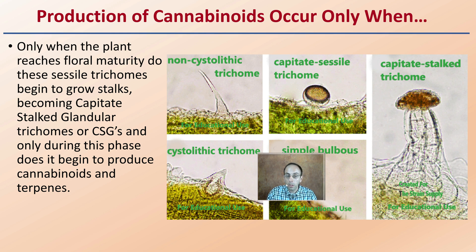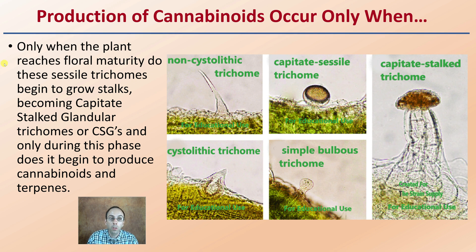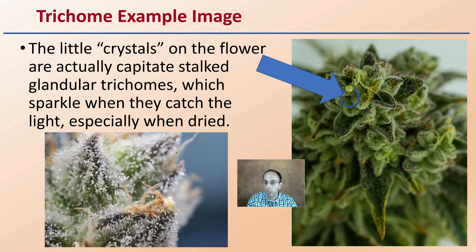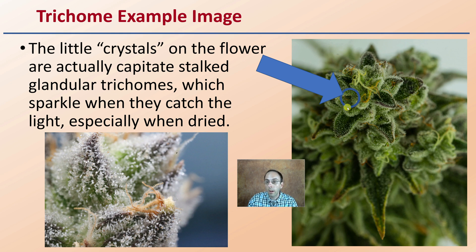Production of these cannabinoids will only occur at certain points — only when the plant reaches floral maturity do these sessile trichomes begin to grow stalks and become CSG trichomes. Only during this phase does the plant begin to produce cannabinoids as well as terpenes. This is why we don't want to harvest plants too early — if the trichomes are underdeveloped, so are the cannabinoids and so are the terpenes, and concentration will be very low. The little crystals on the flower are actually those capitate stalked glandular trichomes, which sparkle when they catch the light, especially when dried.